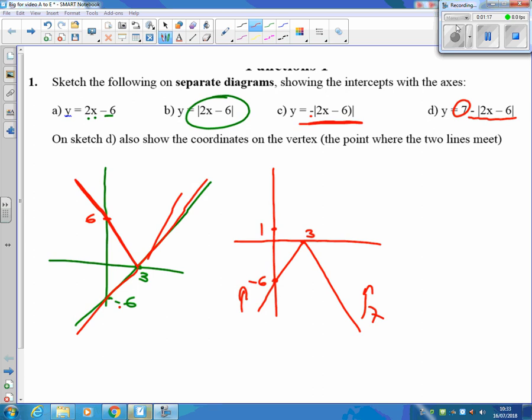This point here at 3, 0 is now going to be crossing all the way up here at 3, 7, and so we're going like this, like that, everything up 7. We're asked to find out the coordinates of the vertex, so that's why we've done that.